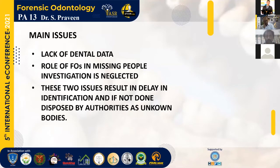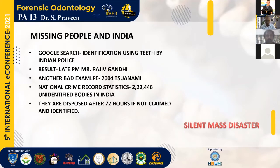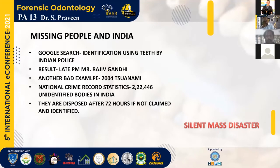The main issue in missing people investigation is a lack of dental data, and the role of forensic odontologists is often neglected. These two factors result in delayed identification, and if not done properly, bodies are disposed of by authorities as unknown. In India, the 2004 tsunami saw most countries identify around 80% of victims by dental records, but that did not take place in India. National crime record statistics show around 2 lakh unidentified bodies are present in India, often disposed of after 72 hours if unclaimed. This acts as a silent mass disaster.